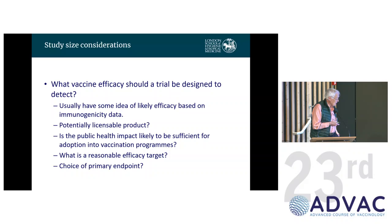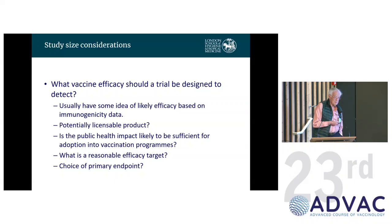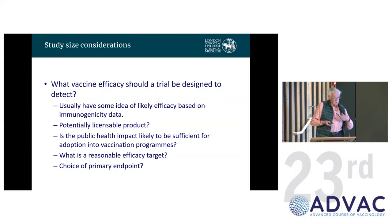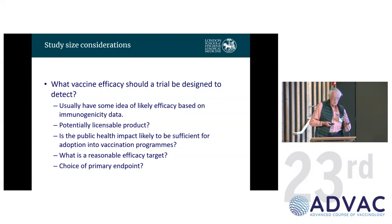The target efficacy depends on what primary endpoint you choose. Many vaccines in low and middle income countries are designed to stop people dying, but using death as the primary endpoint requires an enormous sample size. So we choose an endpoint that correlates with dying — for malaria, clinical malaria, severe malaria, or death from malaria. If the endpoint is too rare, the required trial size may be so large as to be not viable.